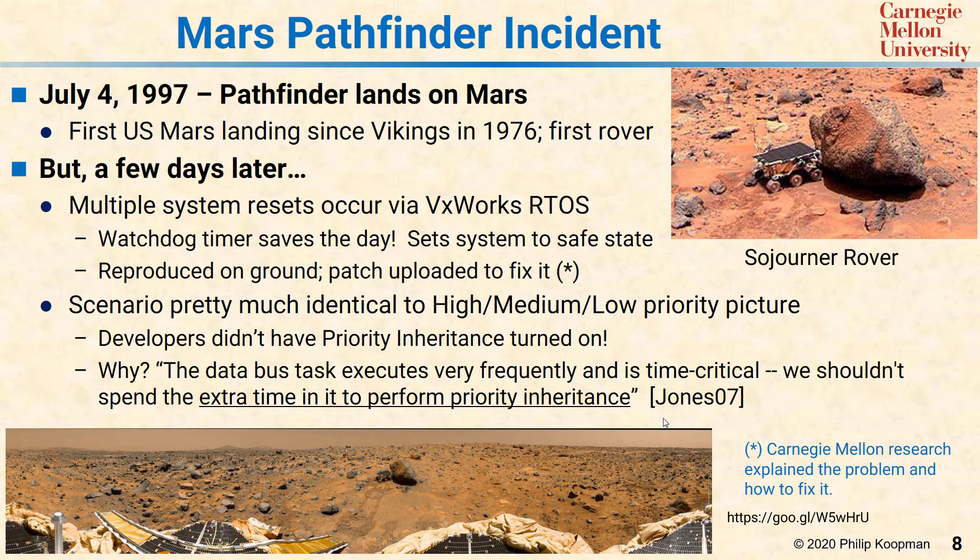The moral of the story is you have to turn on priority inheritance if you have mutexes that can result in unbounded priority inversion. And if it's too expensive, you need to rethink and re-architect your system so you don't need the mutex anymore.